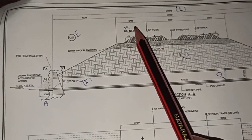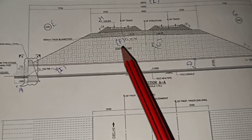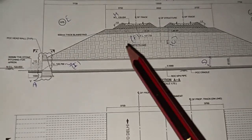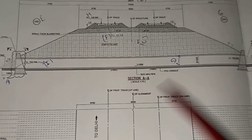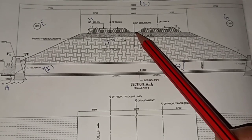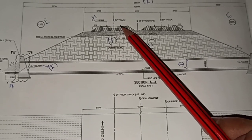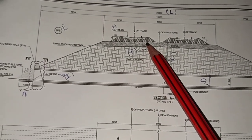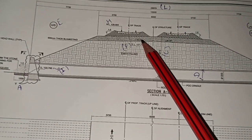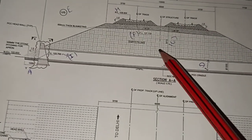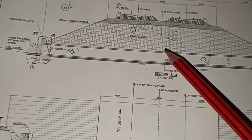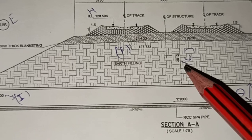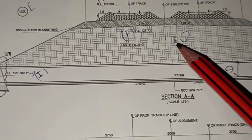Below the tracks we have a blanket of 600 mm thickness, and below that we have subgrade and embankment. Since this is an embankment formation, the cushion is more. From the top of the formation level — above the blanket below the tracks — down to the top of the pipeline is what is called the cushion.